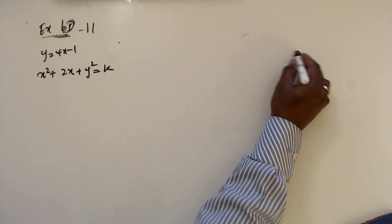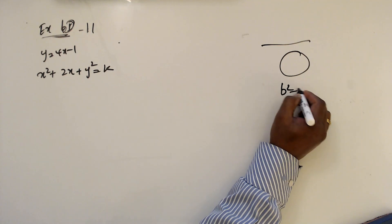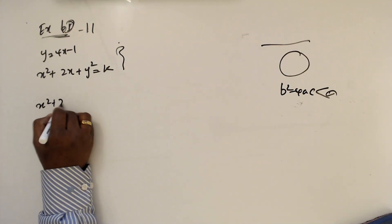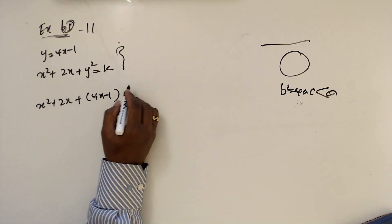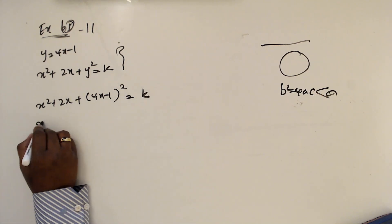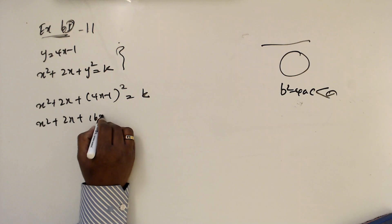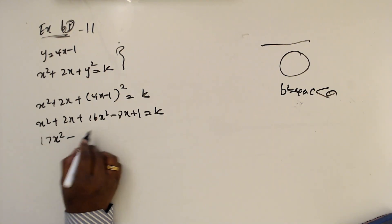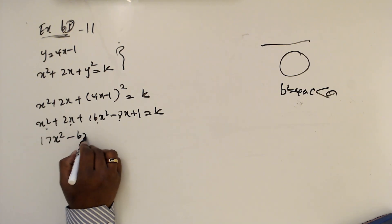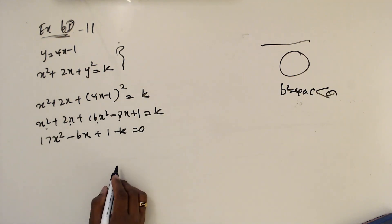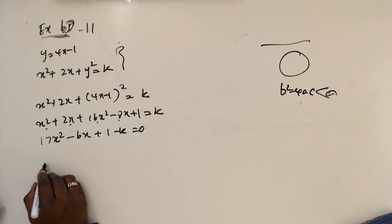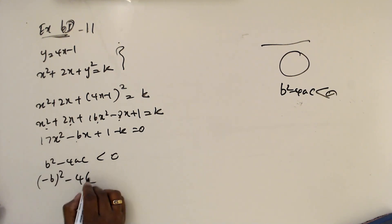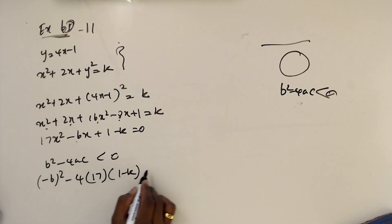Question number 11. The circle and line don't intersect, which means b² - 4ac has to be less than zero. Solving the two equations: x² + 2x + (4x - 1)² = k gives 17x² - 6x + (1 - k) = 0.